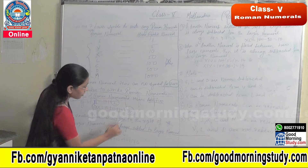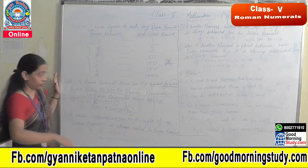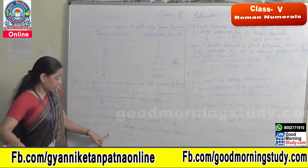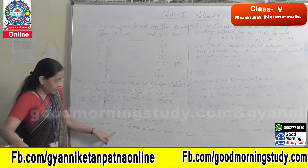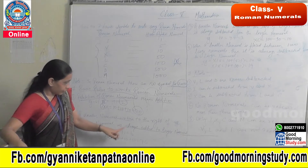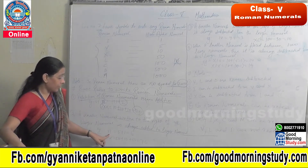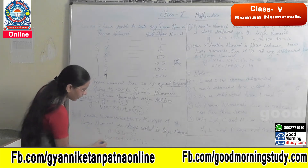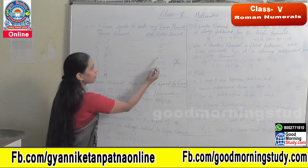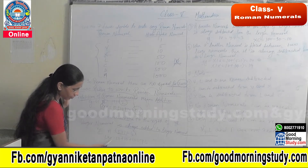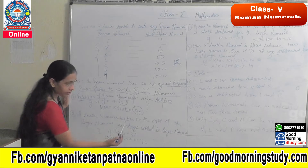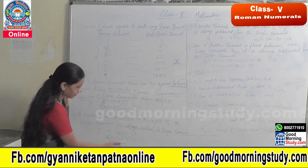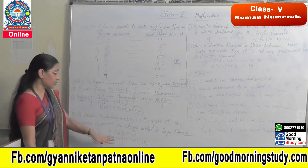The second rule is: a smaller numeral written to the right of a larger numeral is always added to the larger numeral. For example, VI — I is smaller and written to the right of V. V stands for 5 and I stands for 1, so 5 plus 1 equals 6. Another example: LXX — X is smaller and written to the right of L. L is 50, X is 10, X is 10, so 50 plus 10 plus 10 equals 70.